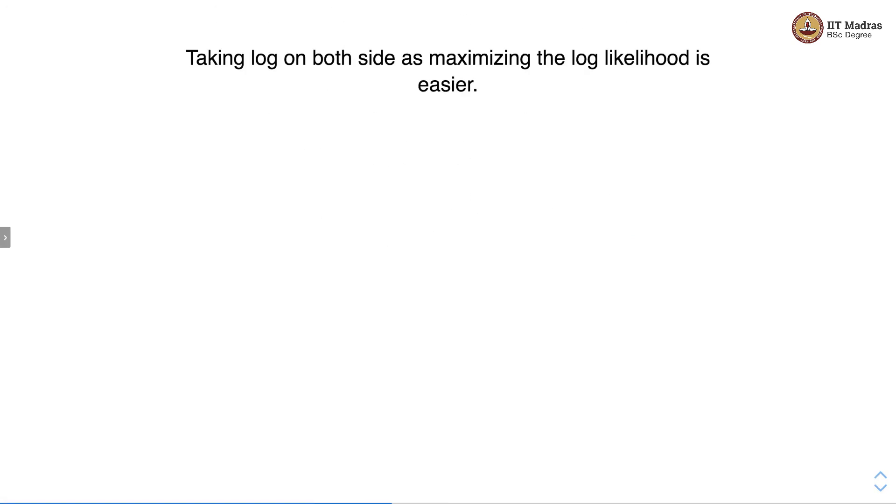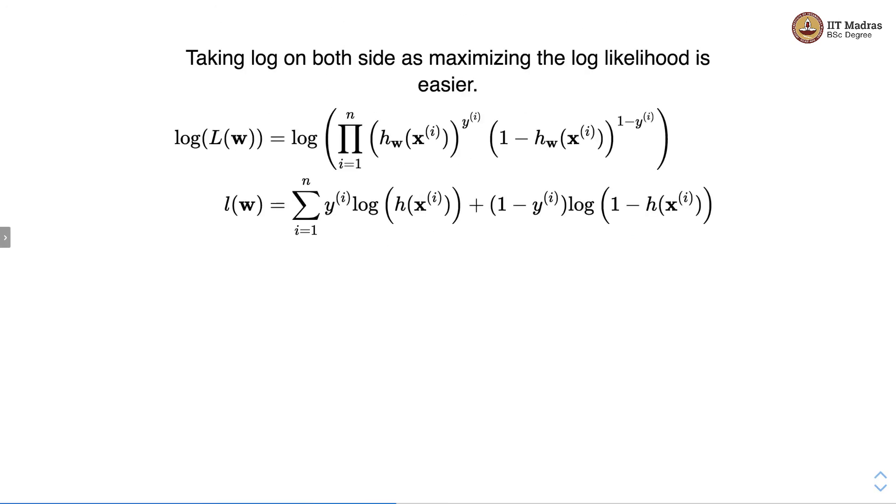We will take log on both sides and why do we take logs? Because maximizing the log likelihood is easier. So we take log of likelihood equal to log of the right hand side.